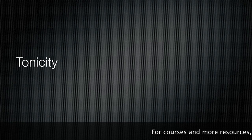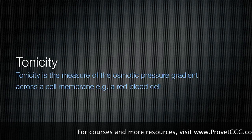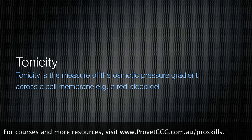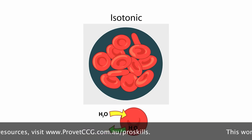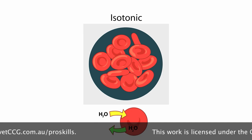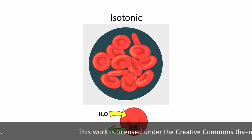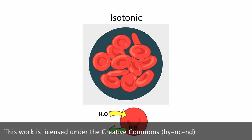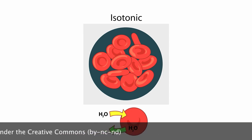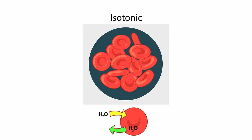The last concept I want to present is tonicity. Tonicity is the measure of the osmotic pressure gradient across a cell membrane, for example a red blood cell. The inside of red blood cells contain particles, ions, proteins and other chemical molecules, which give it a particular osmolarity. In the lab, if we take red blood cells and bathe them in a solution that has the same osmolarity, then the movement of water into the cell is balanced by the movement of water out of the cell. This type of solution is referred to as isotonic, meaning the osmotic pressure is the same inside and outside the cell.